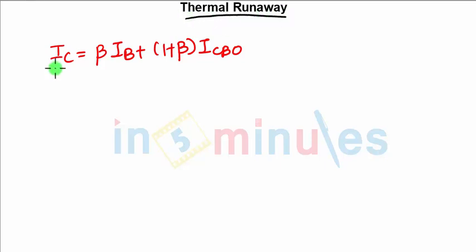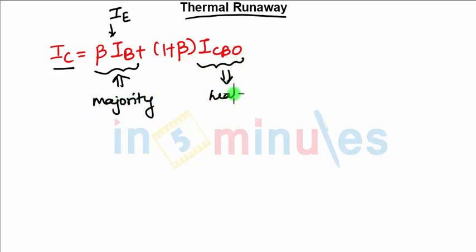Now your output current or collector current IC is the combination of β IB and (1+β) ICBO. IB is because of the emitter current IE, so this current is basically because of majority carriers. And this current we call as leakage current, which is because of minority carriers.